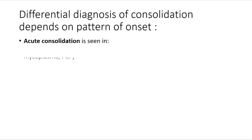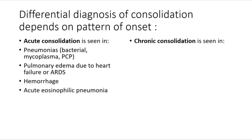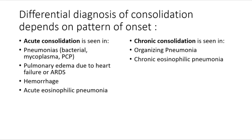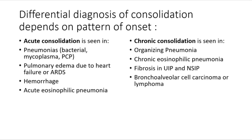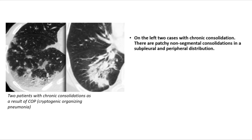Differential diagnosis of consolidation depends on pattern of onset. Acute consolidation is seen in bacterial pneumonia, mycoplasma, PCP, pulmonary edema due to heart failure or ARDS, hemorrhage, and acute eosinophilic pneumonia. Chronic consolidation is seen in organizing pneumonia, chronic eosinophilic pneumonia, fibrosis in UIP and NSIP, bronchoalveolar cell carcinoma, or lymphoma. Most patients evaluated with HRCT present with chronic consolidation.